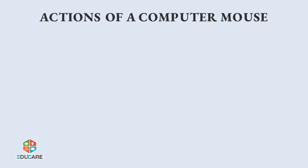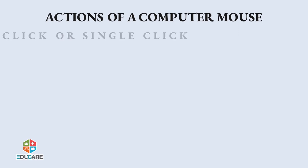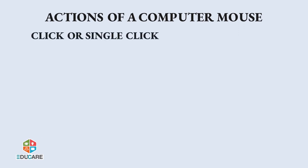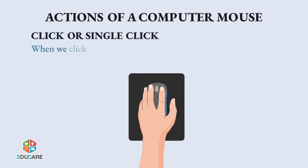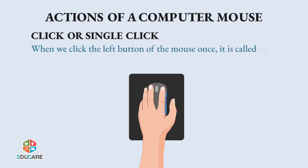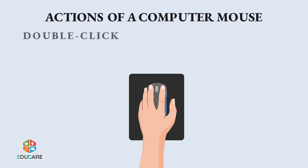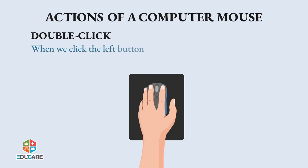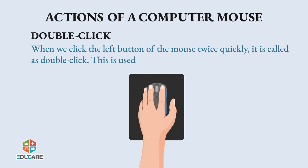Actions of a computer mouse. Click or single click: When we click the left button of the mouse once, it is called a single click. This selects an item. Double click: When we click the left button of the mouse twice quickly, it is called a double click. This is used to open the selected item.